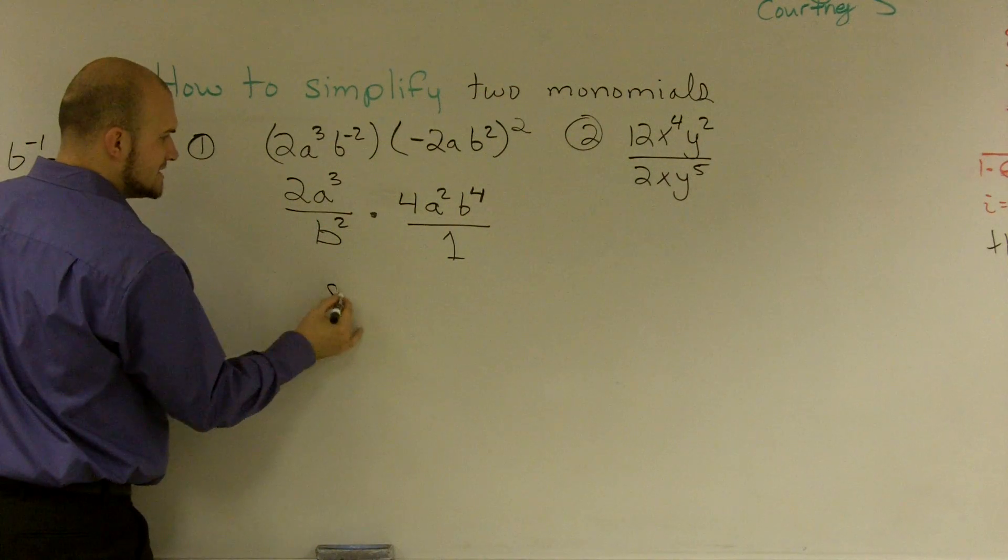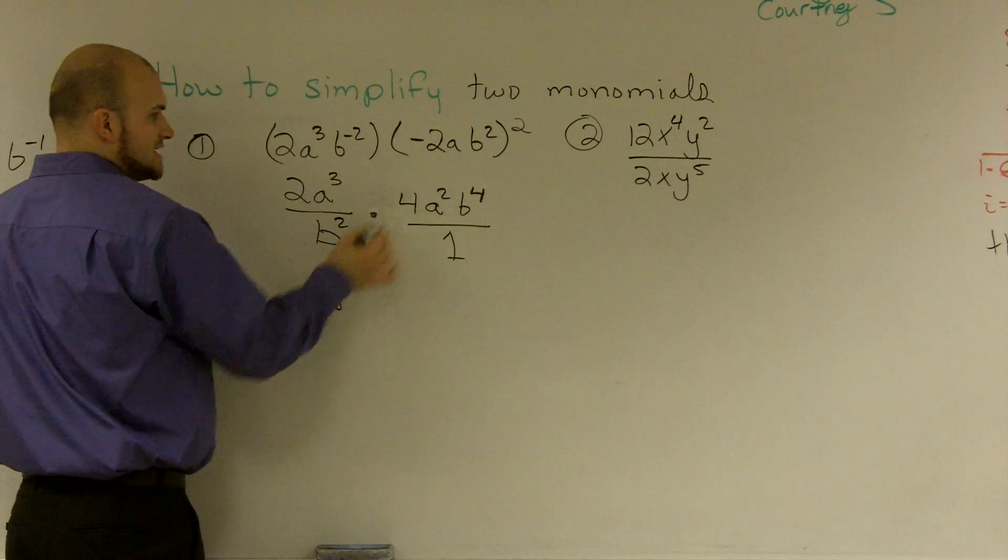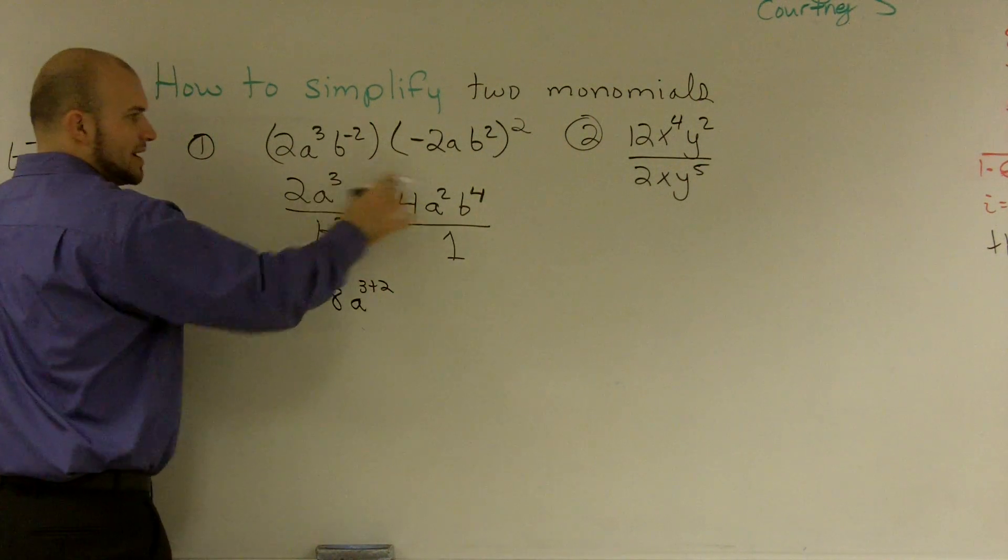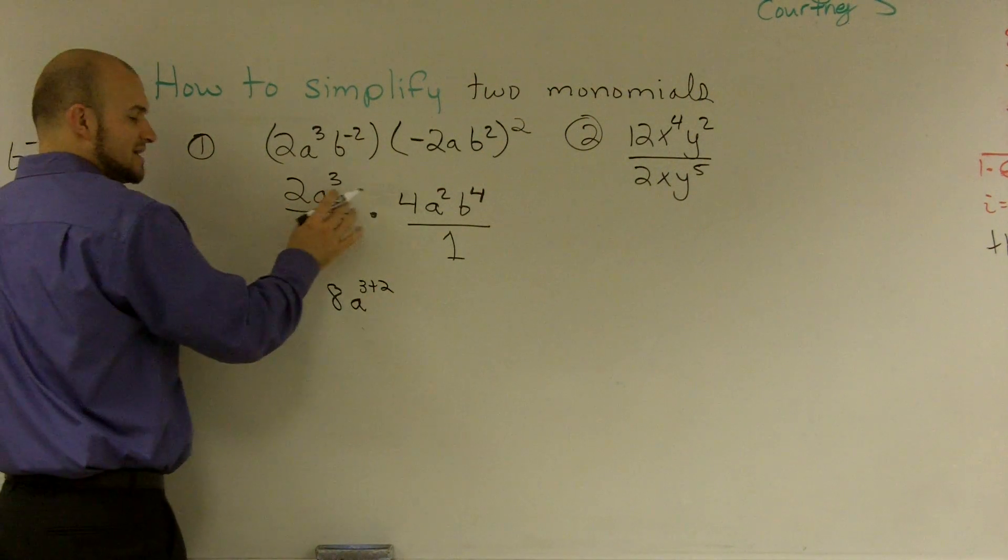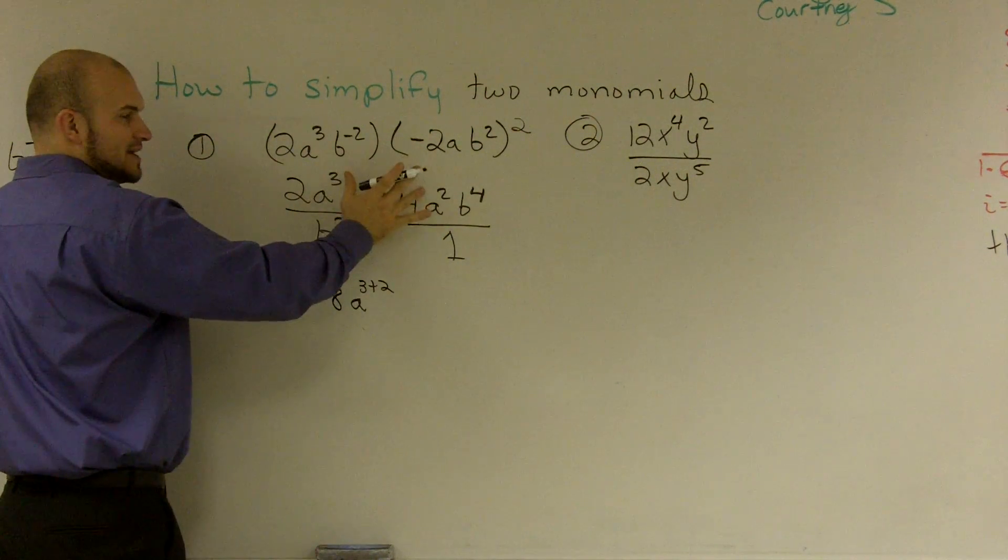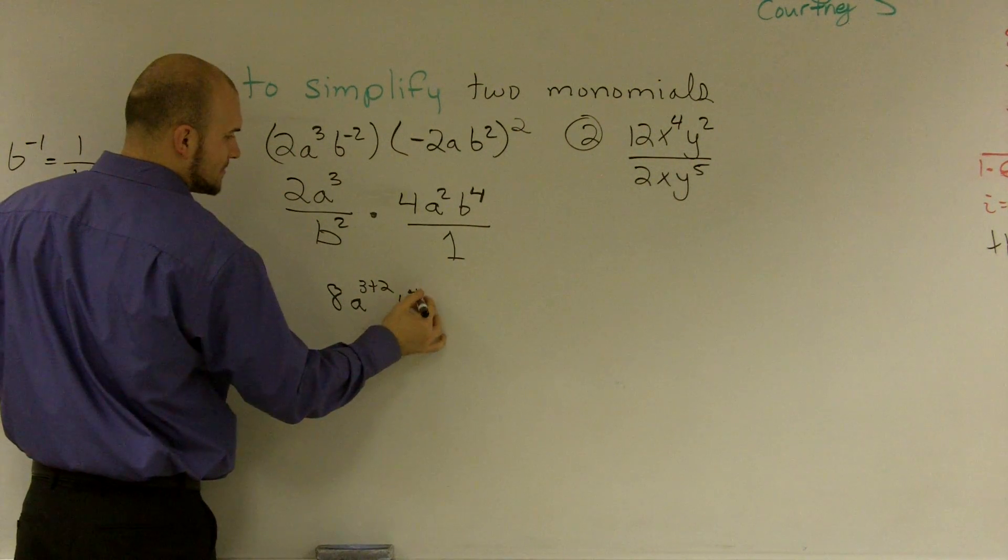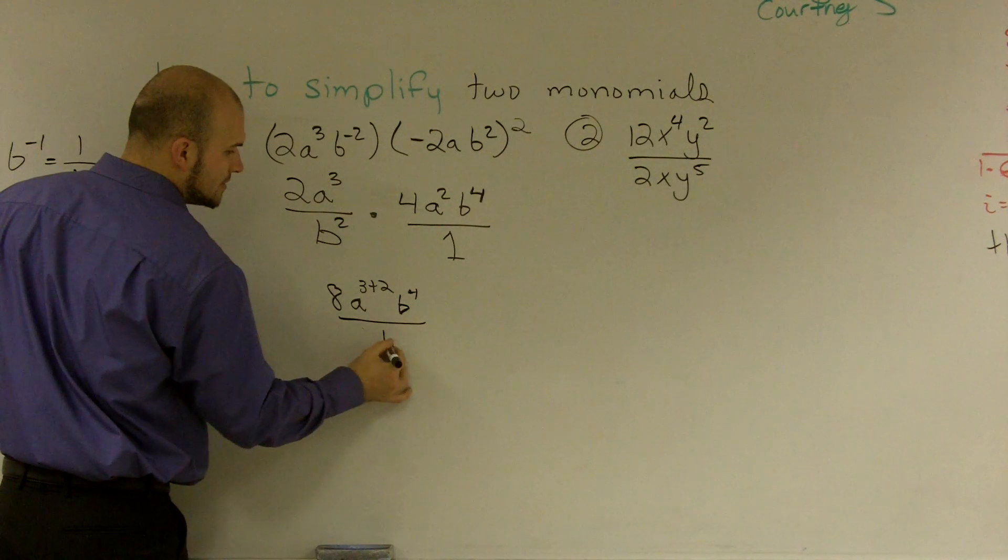Obviously, 2 times 4 becomes 8. a cubed times a squared is going to become a to the 3 plus 2. Remember, when you multiply bases with different exponents, you add the exponents, and b is going to be b to the 4th over b squared.